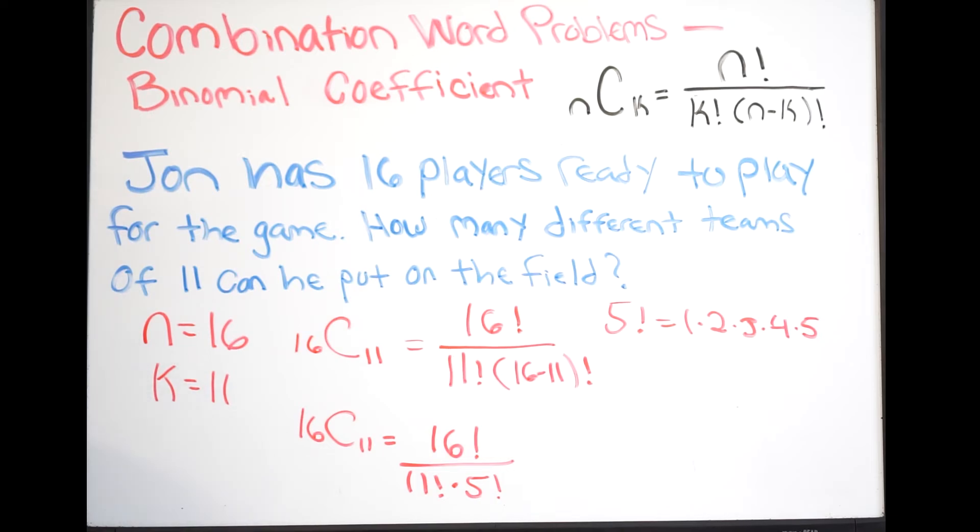So putting this into our calculator we get the following: we get 16 factorial divided by 11 factorial times 5 factorial gives us the following.